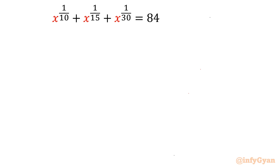Hello everyone, welcome to Infigyan. In this very exciting video on radical equations, we are going to solve x to the power 1 over 10 plus x to the power 1 over 15 plus x to the power 1 over 30, equal to 84. While solving this problem, we will use the quadratic equation, quadratic formula, algebraic identities, and algebraic manipulations.